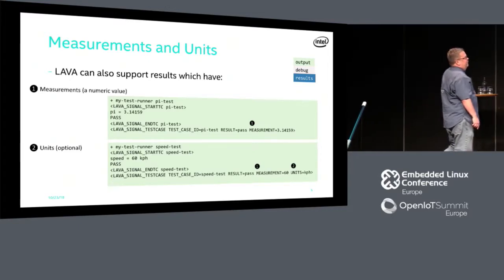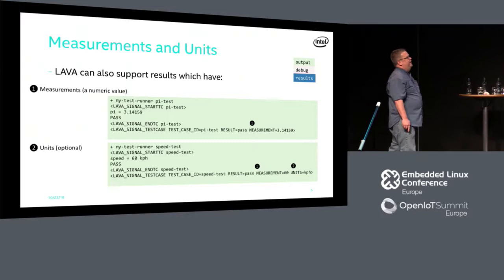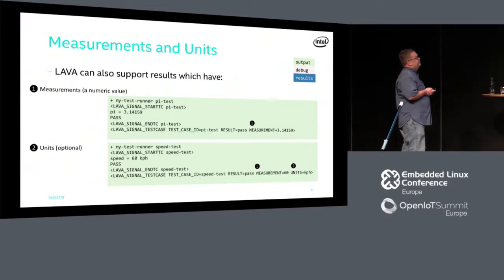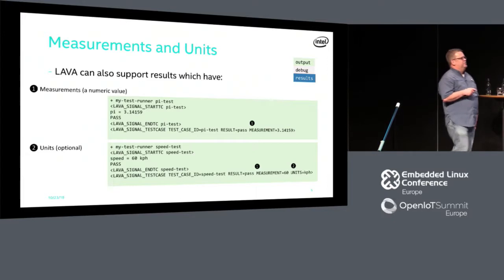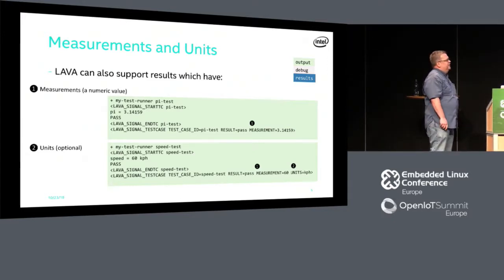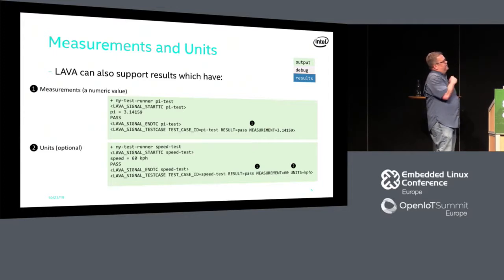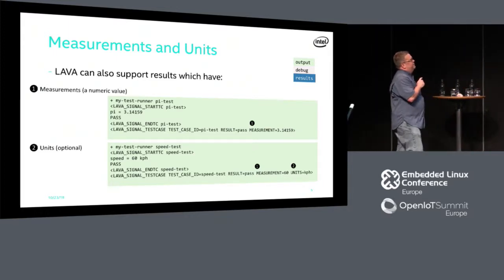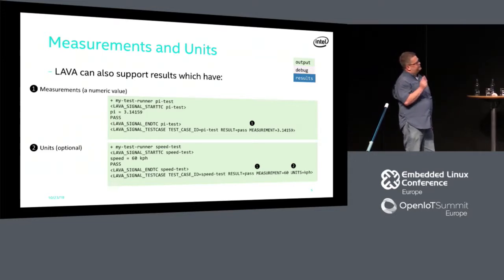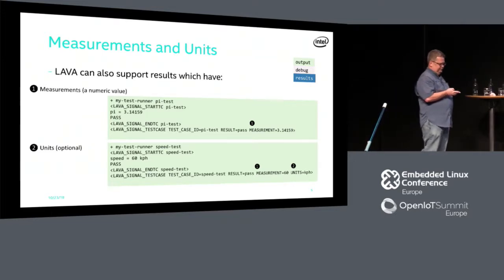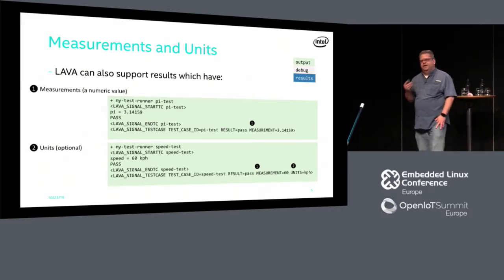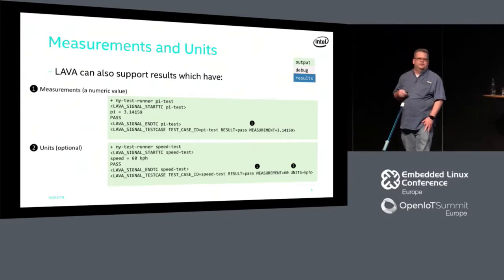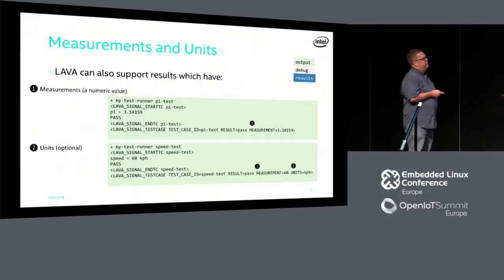There's a little bit of extra stuff available — not super commonly used, but you can have a numeric measurement, like just a number. You could have pi emitted. You can also have a measurement with units, like a velocity. That just adds a couple extra clauses to that last statement — the lava signal test case line. This is another idea I had: now I can actually have my test case runner emit those things as well, and now I start seeing results showing up even with measurements in units.